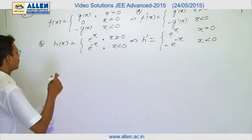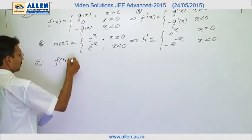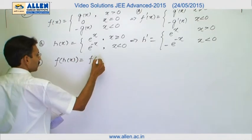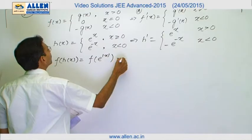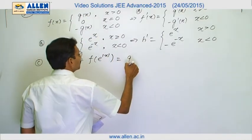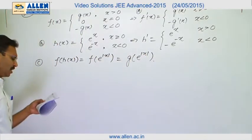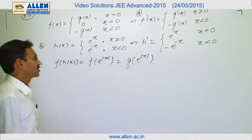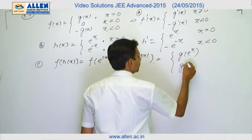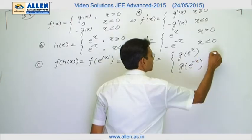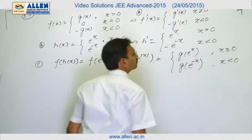Now, option c. f o hx is f of e power mod x and e power mod x is positive. So, we will apply this definition. It will become g of e power mod x. Now, g of e power mod x can be written as g e power x and g e power minus x. This is for x greater than equals to 0. This is for x less than 0.